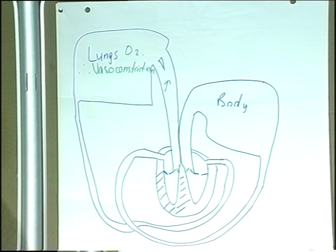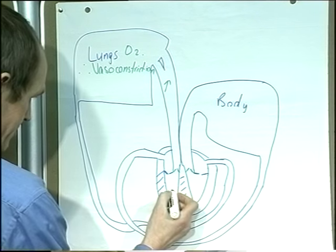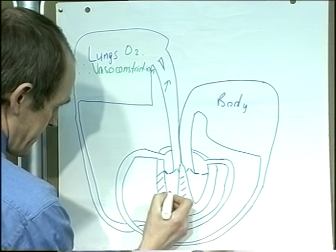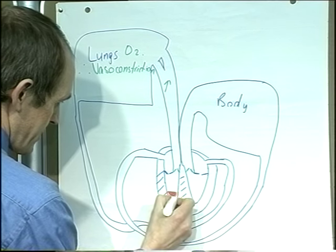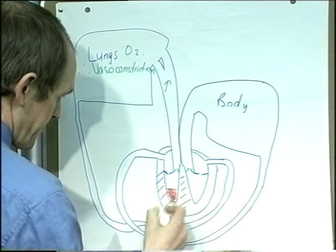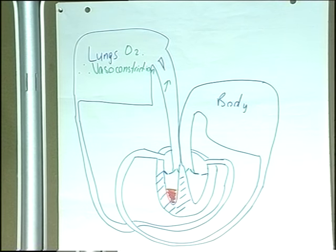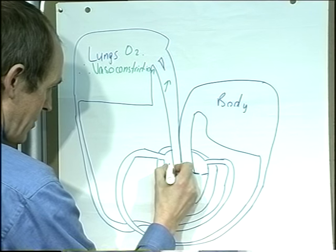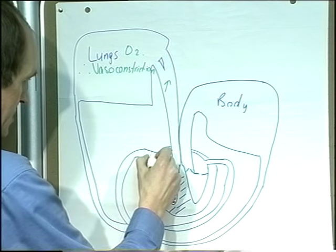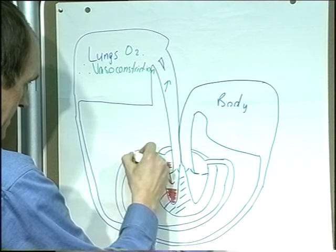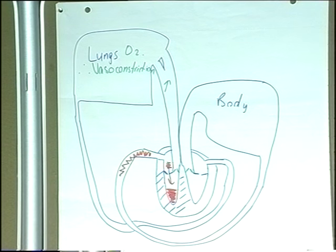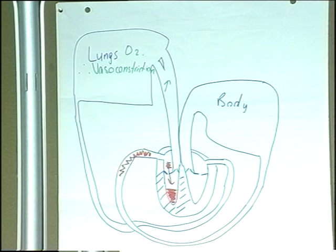When right ventricular failure becomes established, secondary to the hypertrophy, it means that when the ventricle contracts, not all of the blood will have been ejected - there'll be a backlog, because it's working inefficiently. And that means that the blood from the atria will also back up, and there'll be a backlog in the vena cava. We're getting right heart failure, causing systemic vein congestion.